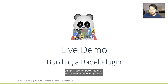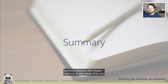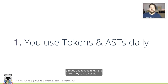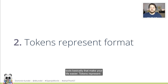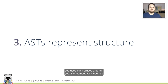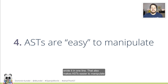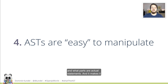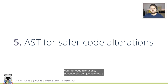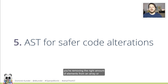Let's get back into the slides to wrap things up. In summary, a few things I want you to take away: you already use tokens and ASTs daily — they're in all the tools that make your life easier. Tokens represent format: how your code is written. ASTs represent structure — they don't care if you used curly braces around your if statement or wrote it in one line. That also makes ASTs easier to manipulate, because you don't have to worry about what parts are code syntax and what parts are actual statements. It makes code alterations safer because you can just take out a node and put a new one in, rather than removing the right amount of elements from an array or the right parts of a string.